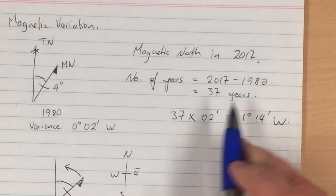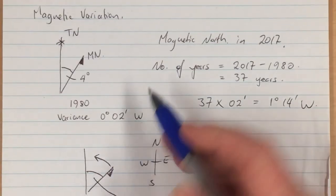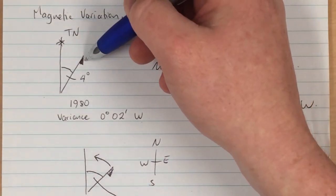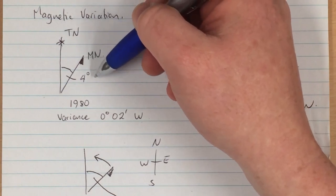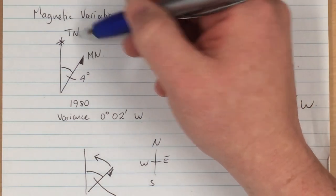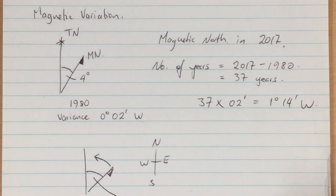Obviously if the variance had been in an easterly direction, then magnetic north would have drifted clockwise and that variance between true north and magnetic north would have increased.